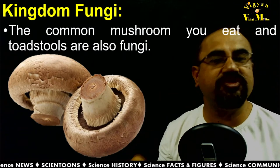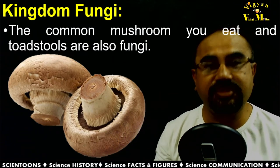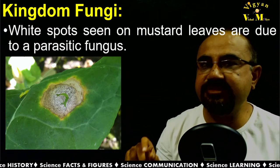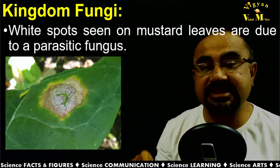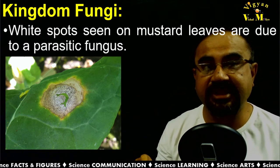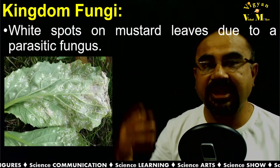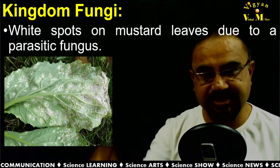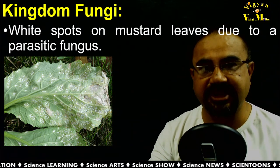The common mushrooms which we eat — toadstool or mushroom — are also a kind of fungi. When spots are seen on mustard leaves, that is because of parasitic fungi. More spots can be seen on mustard leaves which are caused by fungi.